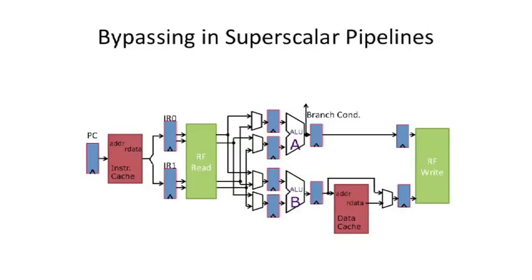Okay, so we sort of introduced this two-way superscalar, in order superscalar. One thing we need to think about is we add a lot more places that data could be coming from if we have to forward data. So when we had one pipeline, we could bypass data out of here, here, and there. So there's only three places.